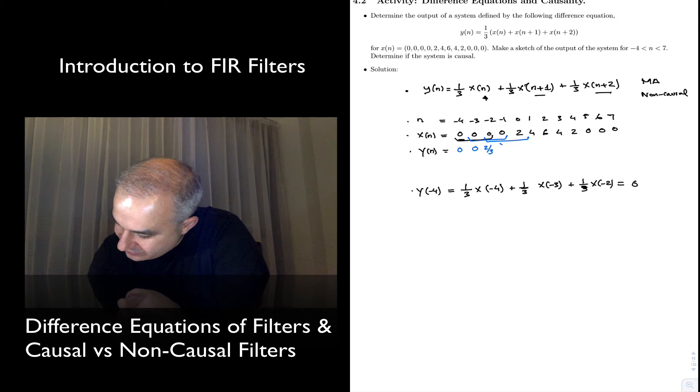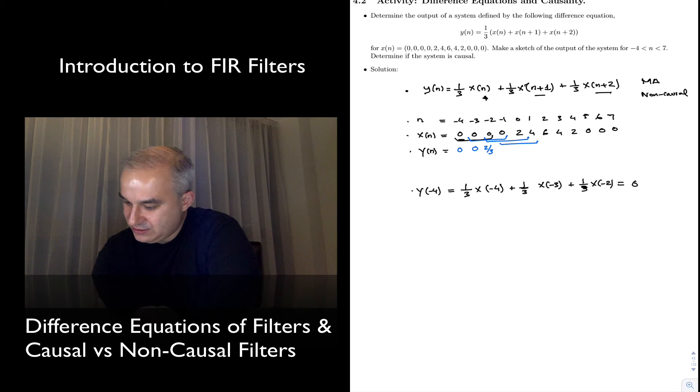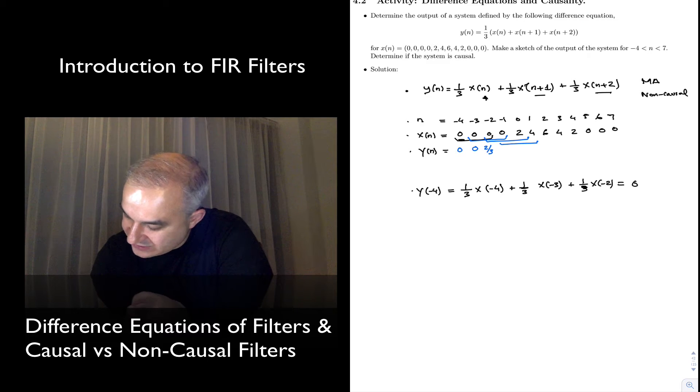And now, here, we move it again, and we get 0, 2, and 4. 4 plus 2 is 6, divided by 3, is going to give us 2.